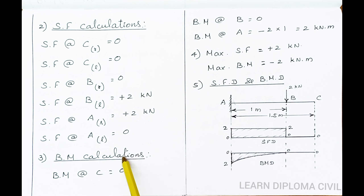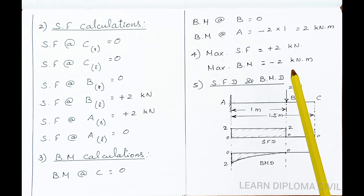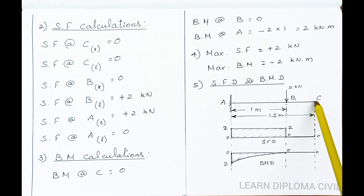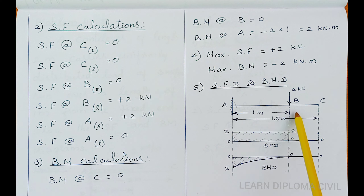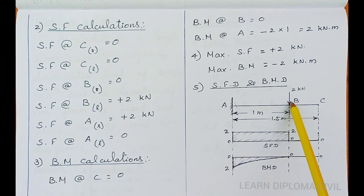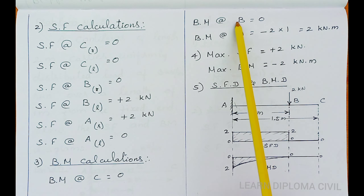Now bending moment calculation. At point C, consider the section — the right side has no force. Therefore, bending moment at C is equal to 0. For bending moment at B, the section at B point also has no force on the right side. Therefore, bending moment at B is also 0.